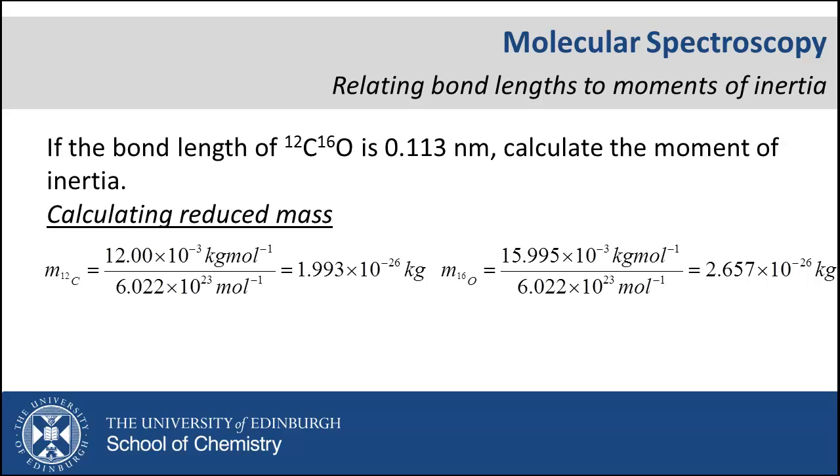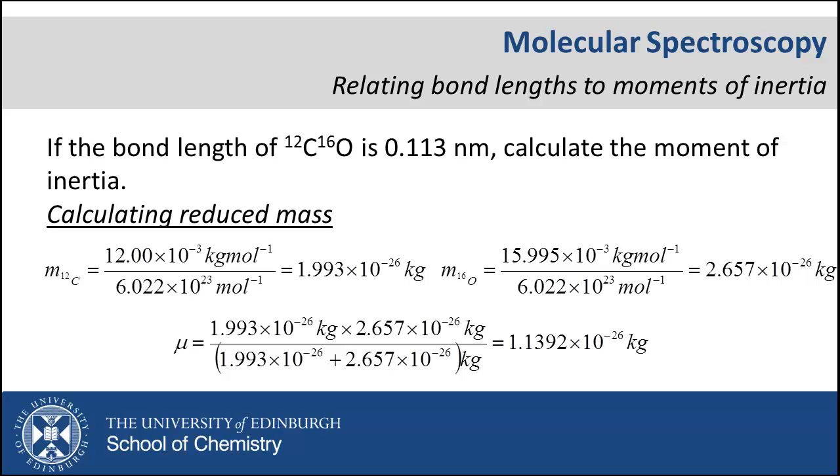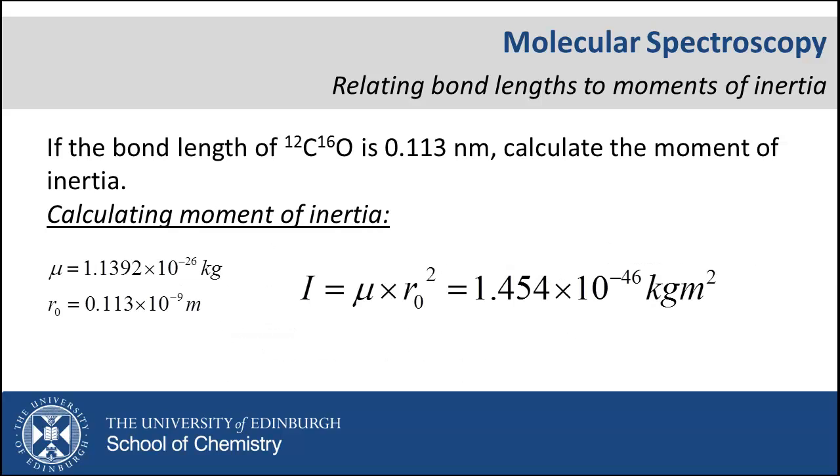Repeating for the second atom, oxygen, we can now calculate the reduced mass. Use the units to help you remember the format of this formula. The product is on top, the sum is on the bottom. Now that we know our reduced mass we can easily calculate the moment of inertia by including our bond length in meters.